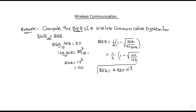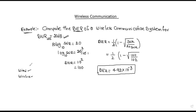Now, for comparison, consider what happens in wireless communication versus an AWGN channel — that is, Additive White Gaussian Noise channel, a kind of noise channel.